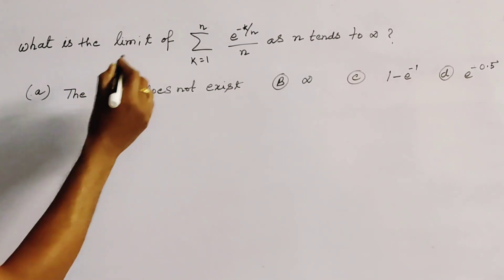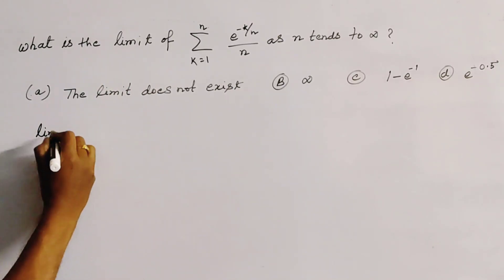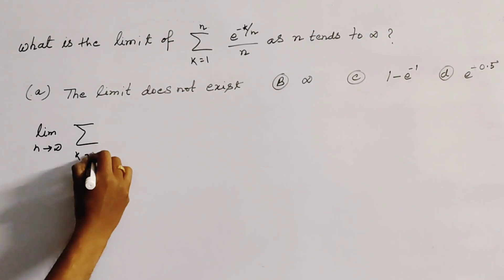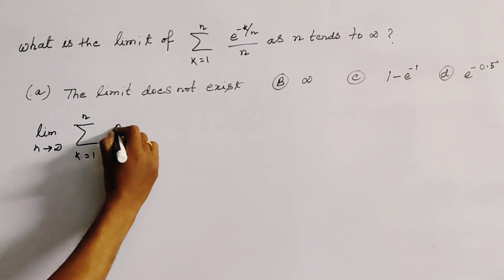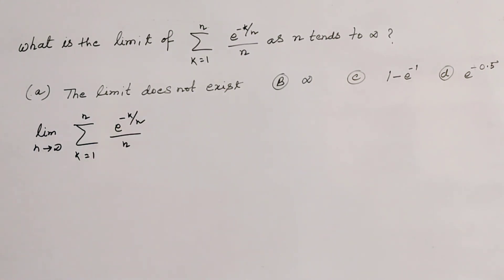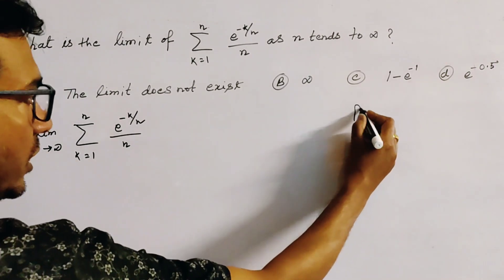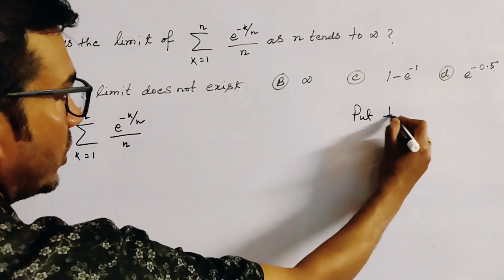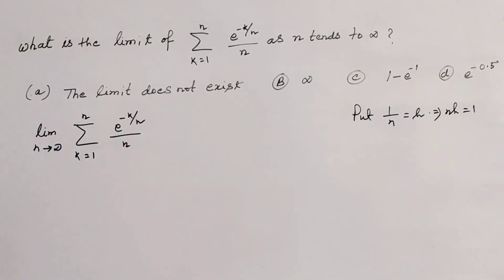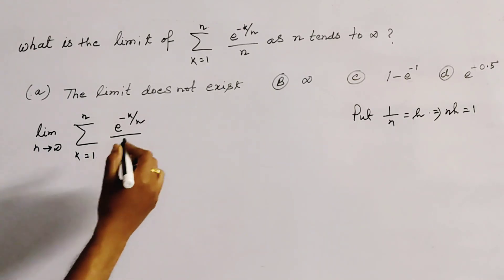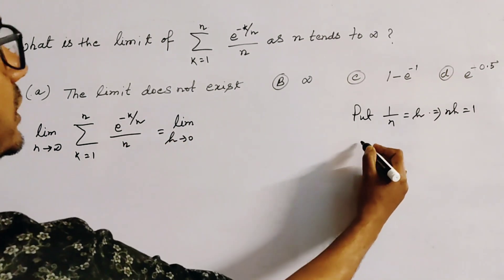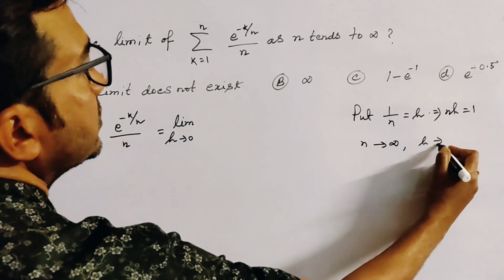So, limit n tends to infinity, sum k equal to 1 to n of e to the power minus k by n, divided by n. I am going to put 1 by n equal to h. That is, n times h equals 1. As n tends to infinity, h tends to 0.